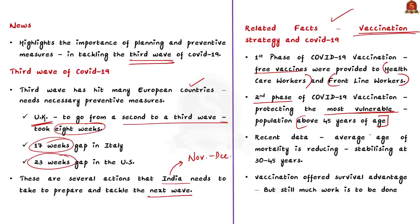Now, data from several states indicate that the average age of mortality is reducing and it is stabilizing around 30 to 45 years. We can see that the average age of mortality is reducing. Vaccines are the main cause for the reduction in the average age of mortality. According to the author, vaccination might have already offered survival advantage. But still, extraordinary efforts will have to be made to secure vaccines for vulnerable people. When vaccine supply constraints are resolved, vaccines must be given to all people with comorbidities, irrespective of age. This is suggested by the article.